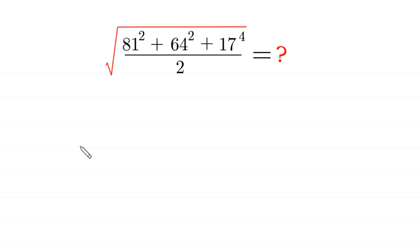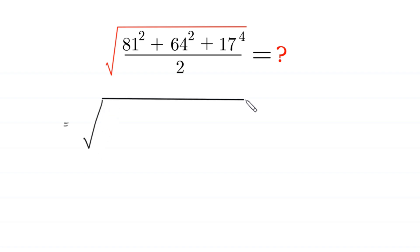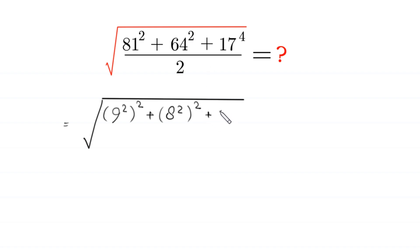Hello everyone, welcome to how to evaluate this radical expression: square root of 81 squared plus 64 squared plus 17 to the power 4 divided by 2. This expression can be rewritten as the square root of 9 squared whole to the power 2, plus 8 squared whole to the power 2, plus 17 to the power 4 divided by 2.